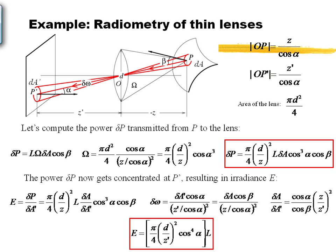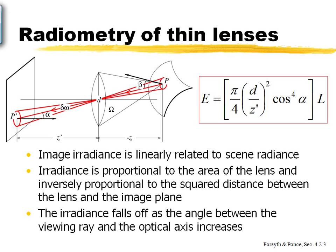Generally, this linear relationship holds very well when you have objects that are more or less in front of and at a distance from the camera. To summarize this relationship for a thin lens model: the irradiance is linearly related to scene radiance, proportional to the area of the lens, inversely proportional to the square of the distance between the lens and the image plane (the focal length), and falls off as the angle between the viewing ray and the optical axis increases.